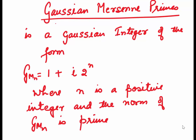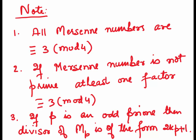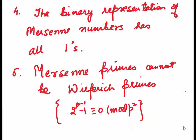Few things to note. All Mersenne numbers are congruent to 3 mod 4. If a Mersenne number is composite, at least one factor is congruent to 3 mod 4. If p is an odd prime, then a divisor of Mp is of the form 2kp + 1. The binary representation of Mersenne numbers has all 1s and the Mersenne primes cannot be Wieferich primes. What are Wieferich primes? Primes which satisfy 2^(p-1) - 1 is congruent to 0 mod p^2.